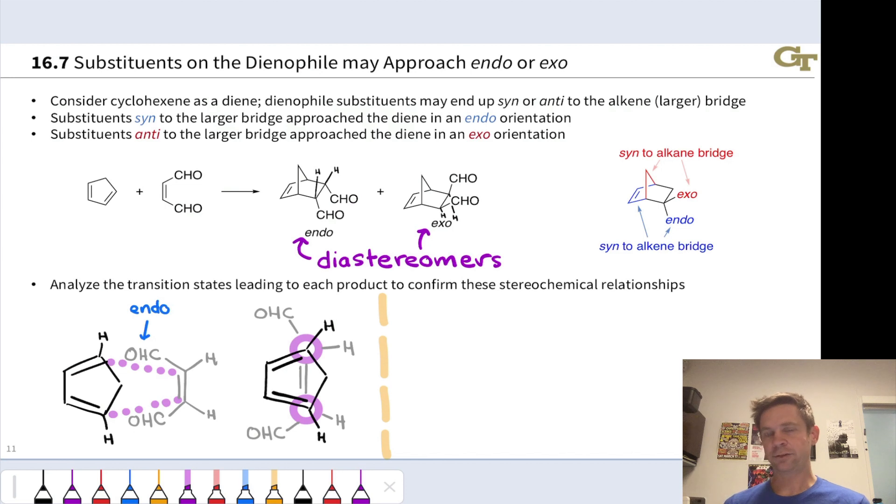To generate the exo transition state, we use a very similar picture. We just flip over the dienophile. So the two reactants are still approaching one another in parallel planes. The dienophile is still in the back, and the diene is still in the front, but now notice we've flipped over,